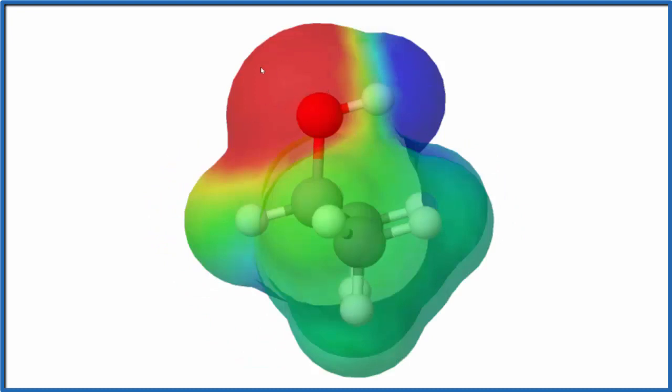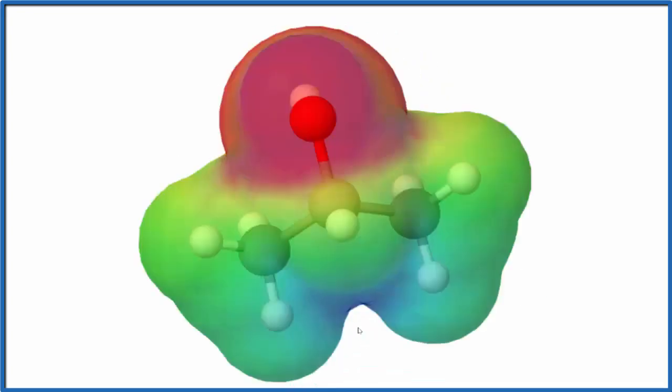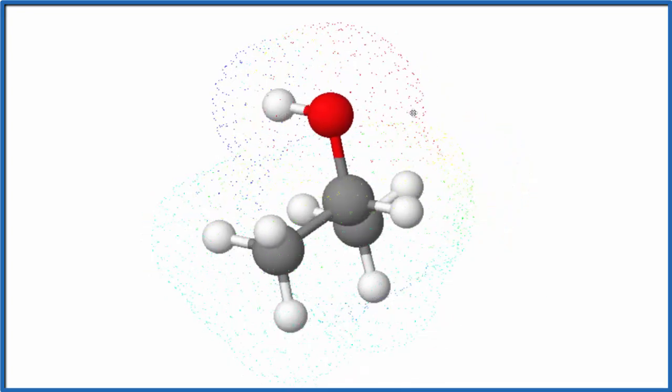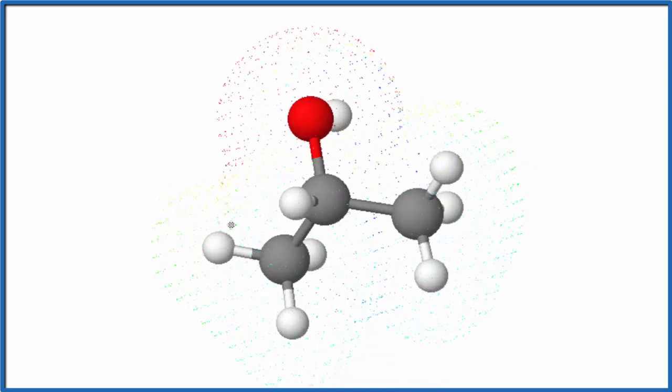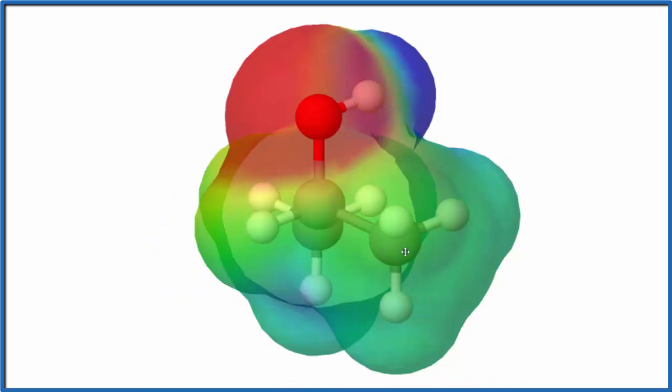So because we have these poles, the red's very negative, we have blue as positive, and a little bit of blue down here. This is definitely a polar molecule. And that's due to the electronegativity difference between that oxygen and the hydrogen, and then the carbons here.